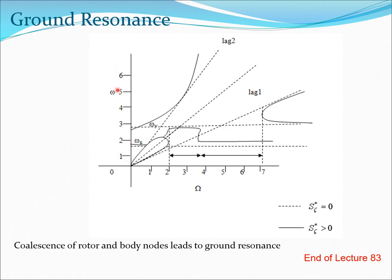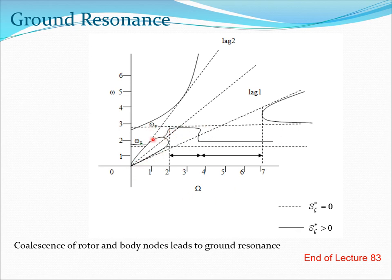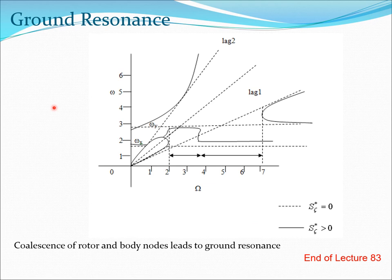If we make a plot of frequency versus rotation speed with no coupling — s_zeta_star equals zero, shown as dotted lines — we would have lag 1, lag 2, and support motion frequencies as straight lines with no modal coalescence. But because of the presence of the s_zeta_star term, you get coalescence between the modes. The four modes shown in dark lines result from the presence of s_zeta_star. Physically, the coalescence of rotor and body modes leads to ground resonance.